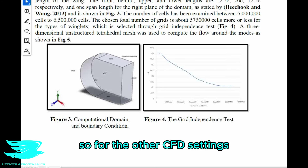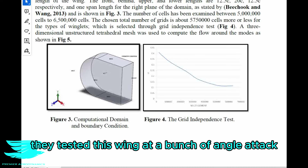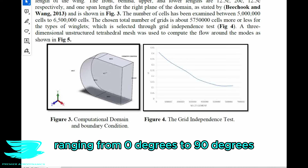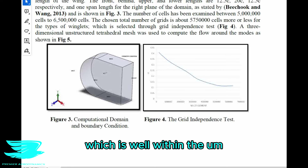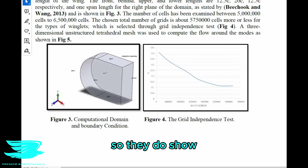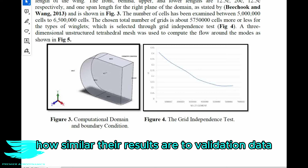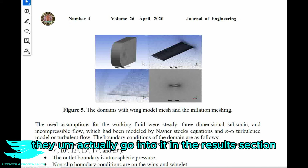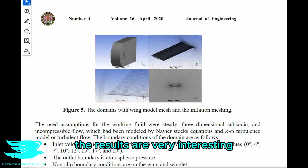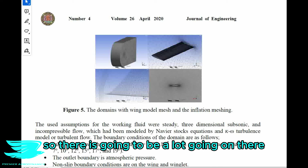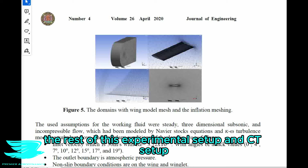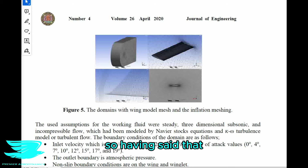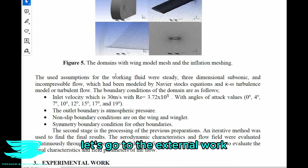For the other simulation settings, they tested this wing at a bunch of angles of attack ranging from 0 degrees to 9 degrees, which is well within the stall regime of the wings. They do show how similar their results are to validation data, but they don't do it just yet — they actually go into it in the results section. And let me tell you, the results are very interesting, so there is going to be a lot going on there.